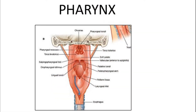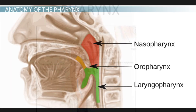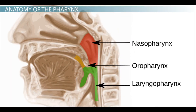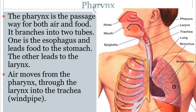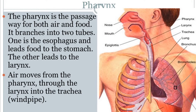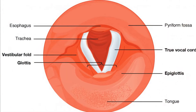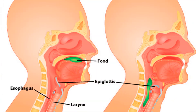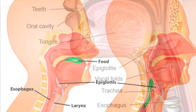The nasal cavity leads into the pharynx. The pharynx is the common chamber for food and air. The pharynx leads into the larynx. The opening of the pharynx into the larynx is guarded by a muscular flap called the epiglottis. At the time of swallowing food, the epiglottis closes the opening and prevents food from entering the windpipe.